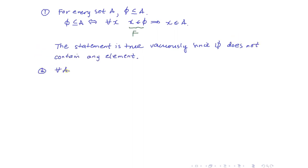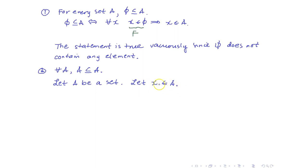Next, we want to show that for every set A, A is a subset of itself. For our proof, let A be a set. We want to show A ⊆ A, so we get an arbitrary element: let x be an element of A. Then we must show that x is an element of A — which is exactly what we have. Therefore x is in A, and so A ⊆ A. We use the tautology P implies P: x ∈ A, therefore x ∈ A.